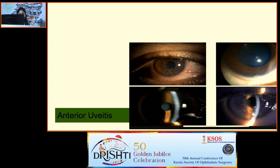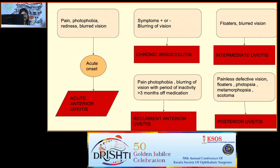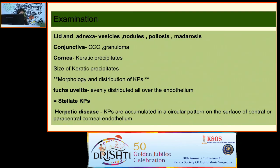Last anterior segment case: anterior uveitis. Patients present with pain, photophobia, redness, and blurred vision — usually acute onset. If symptoms are absent with blurred vision, think chronic. Pain, photophobia, and blurred vision with a period of inactivity of more than three months off medication suggests chronic recurrent anterior uveitis. Ocular history is very important. Systemic history is crucial in uveitis: joint pain, fever, cough, weight loss, oral/genital/urinary ulcers, skin lesions, and drug intake are all important.